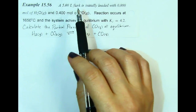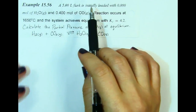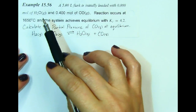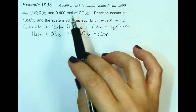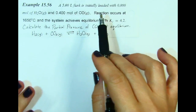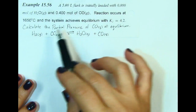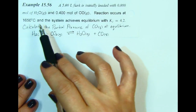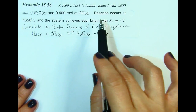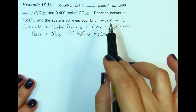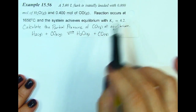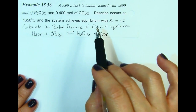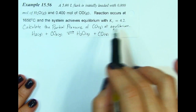We have a 5-liter flask that is initially loaded with 0.8 moles of water in the gaseous phase and 0.4 moles of carbon monoxide gas. The reaction occurs at a temperature of 1650 degrees Celsius and the system achieves equilibrium with an equilibrium constant of 4.2. Calculate the partial pressure of the carbon monoxide gas when it's at equilibrium.